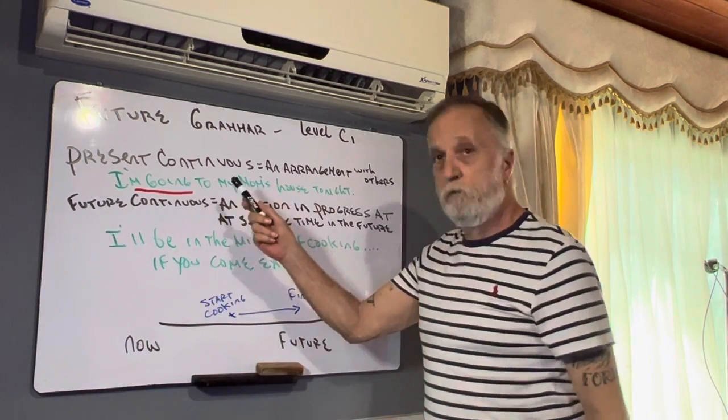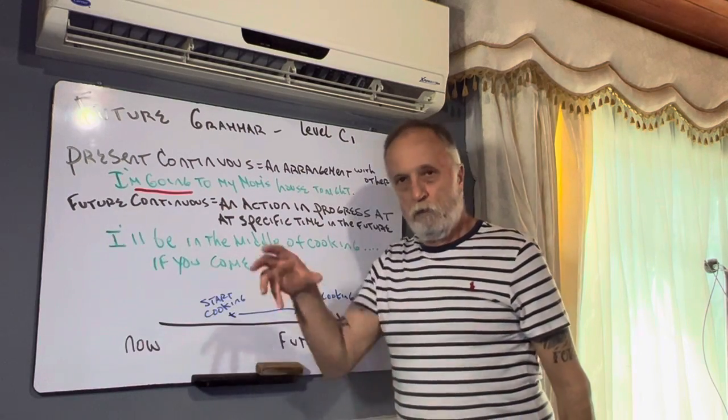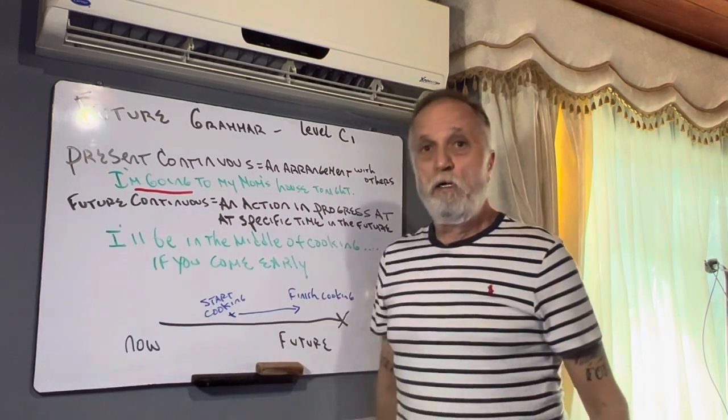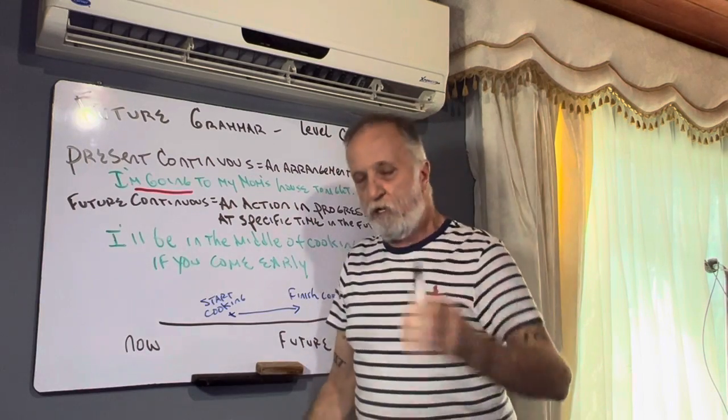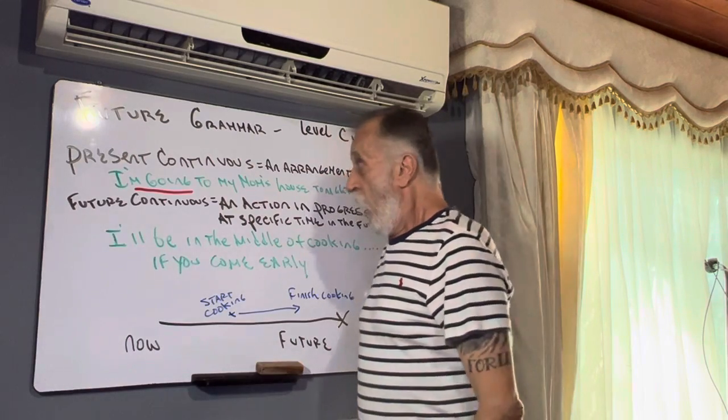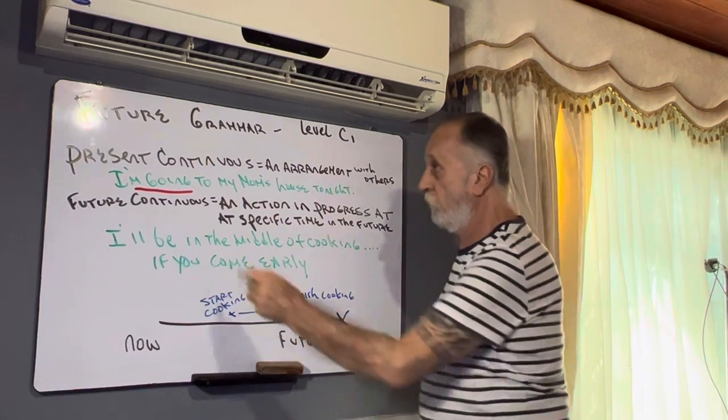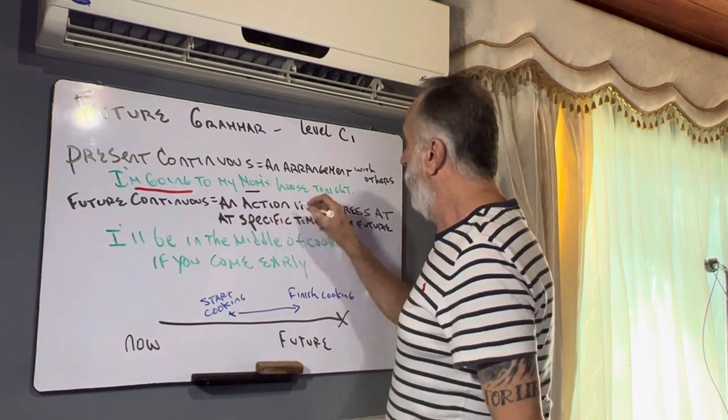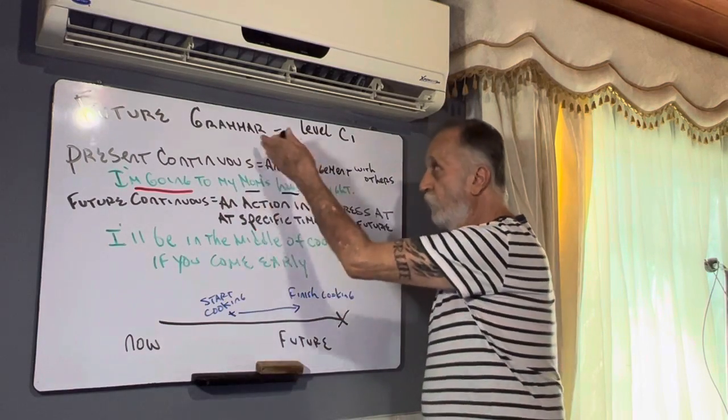We all know present continuous is a temporary action that's now. And then after we learn it's raining, I'm wearing a shirt. We learn that it's for the casi futuro, the near future. And then we get up there in the intermediate level and we say, hey, it's an arrangement. And then we're to the level of future where present continuous is an arrangement with other people. I'm going to my mom's house tonight. Continuous for the future. It's good.